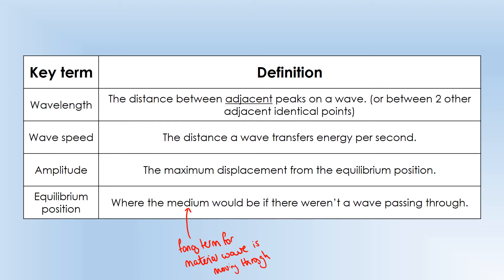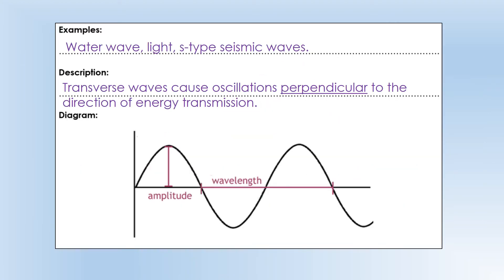On the transverse wave diagram, we can see the wavelength marked as the distance between the same point — you could also measure it between any adjacent identical points. The amplitude is the maximum displacement from the equilibrium position. The line in the middle marks the equilibrium position — where the particles would be if there were no wave passing through. Wave speed can't be shown in a static diagram, but it represents the distance energy travels per unit time.